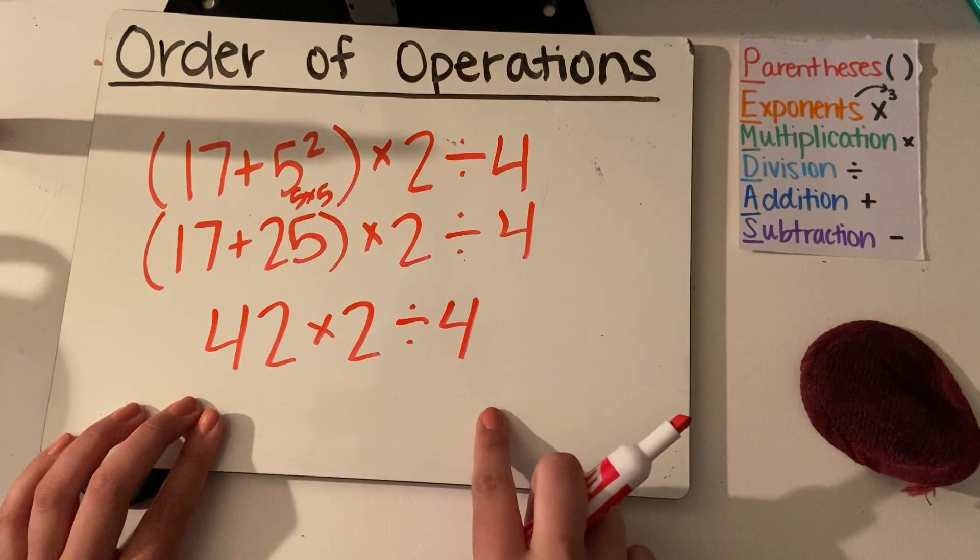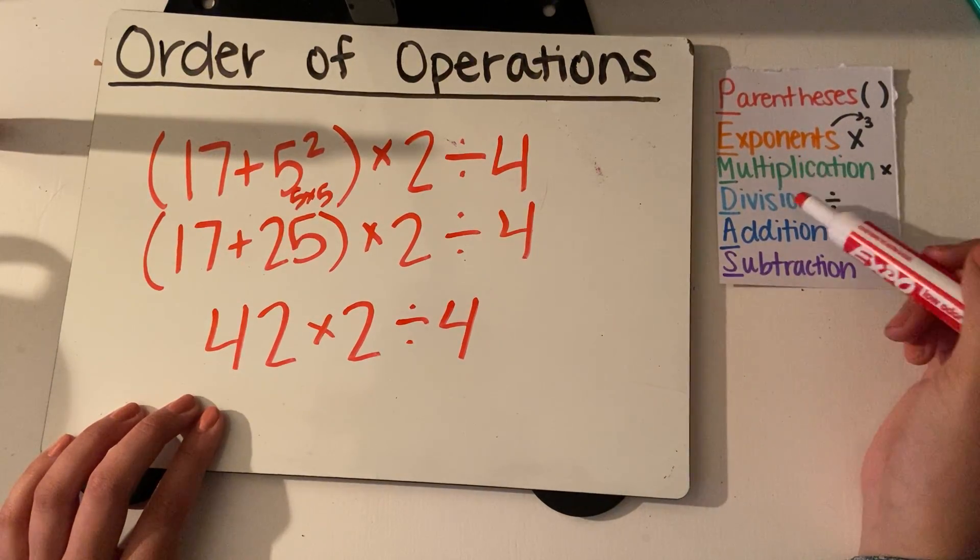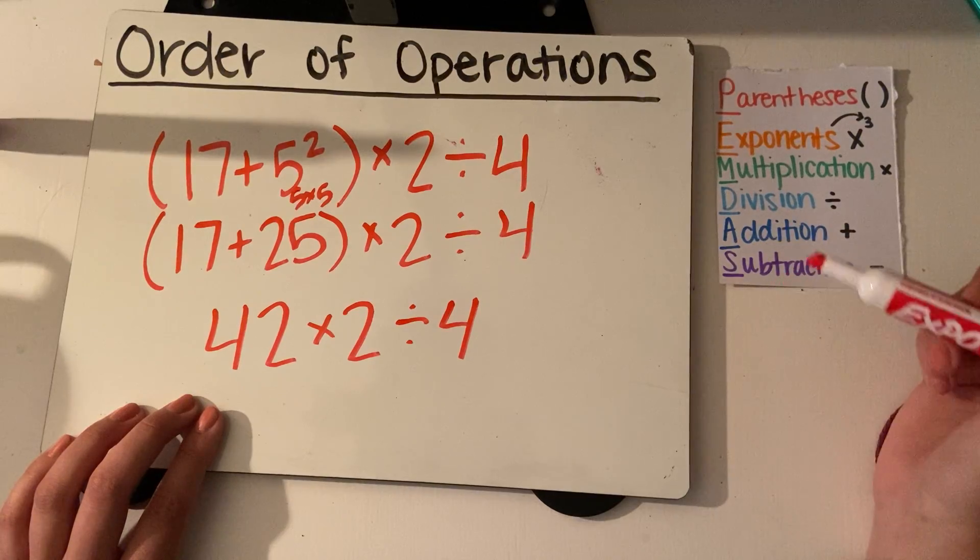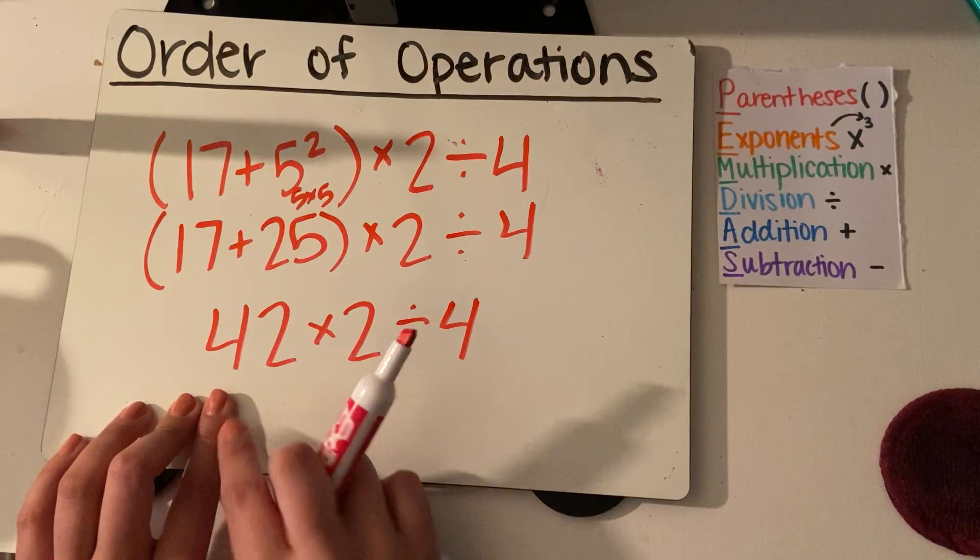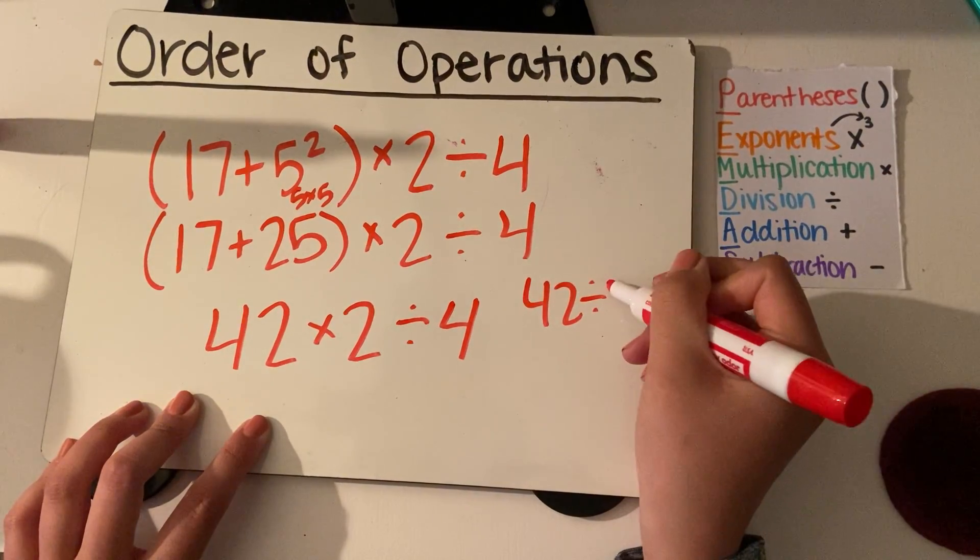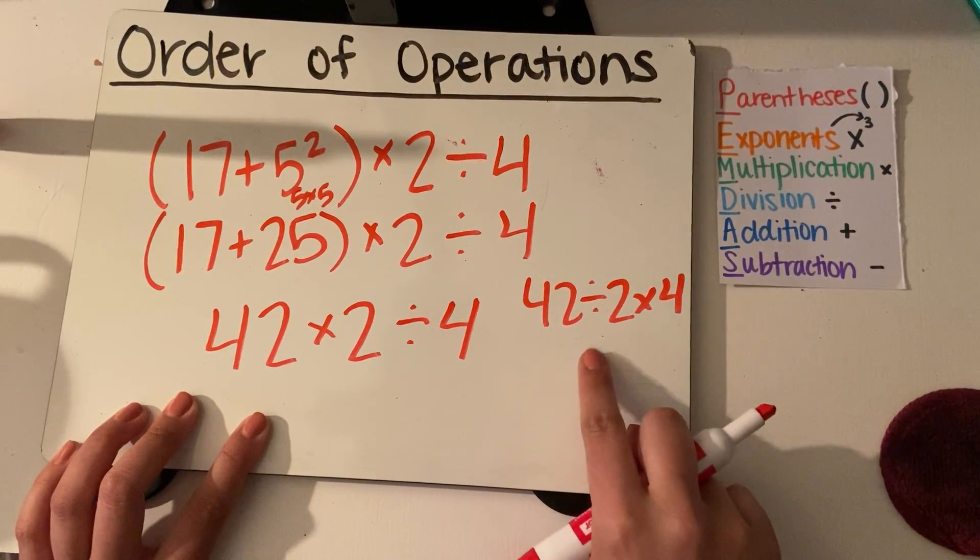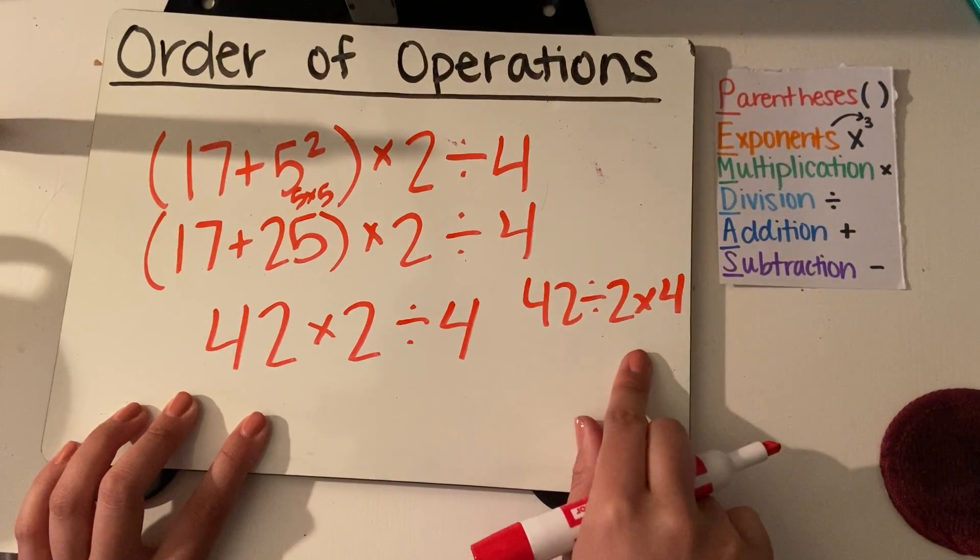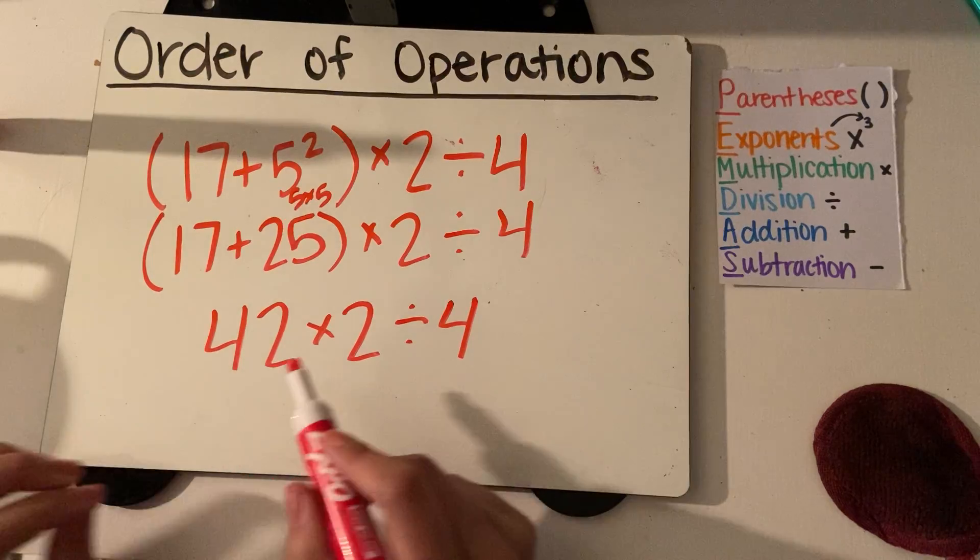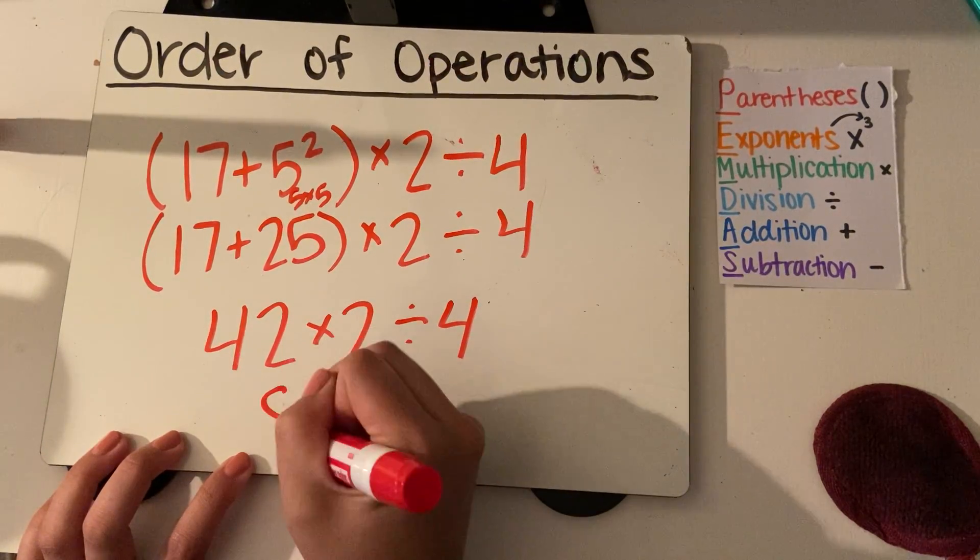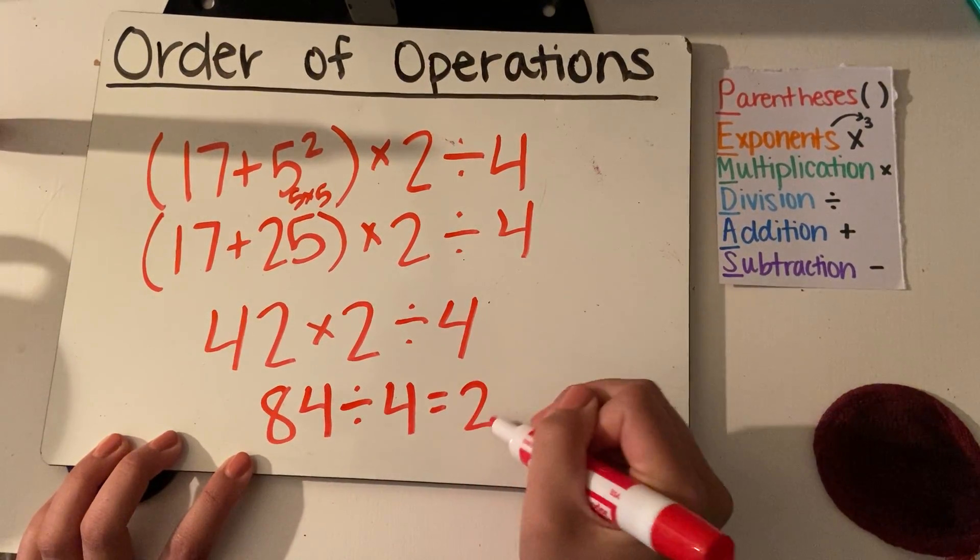Again, I'm going to work left to right here. We talked about in the first video that multiplication and division can be swapped around, and addition and subtraction can also be flip-flopped. It just depends on if you read it from left to right. So if this had said 42 divided by 2 times 4, I would still solve left to right, even though the division sign comes before the multiplication. So we're going to solve this one. I've got 42 times 2 is 84. 84 divided by 4 equals 21.